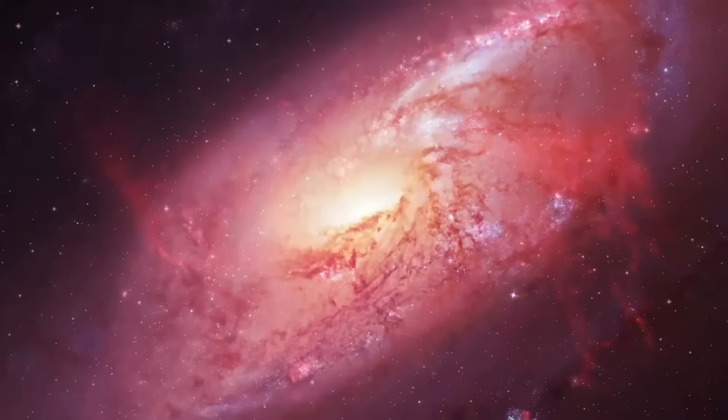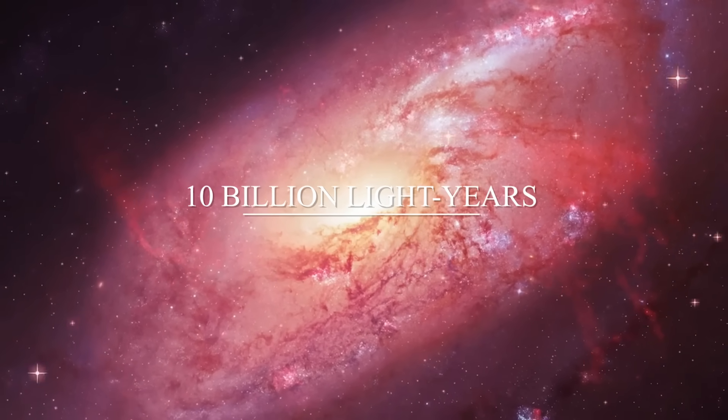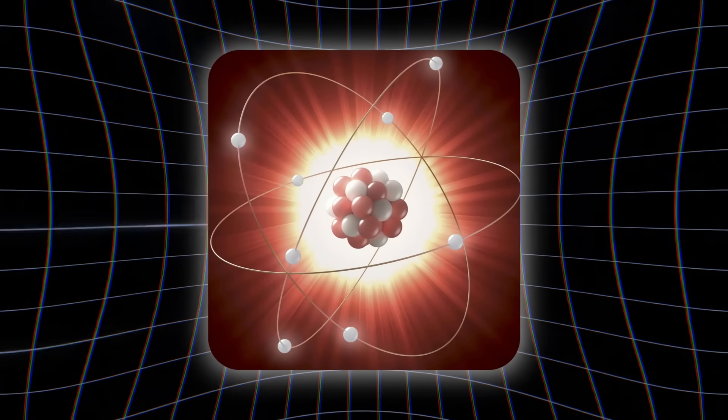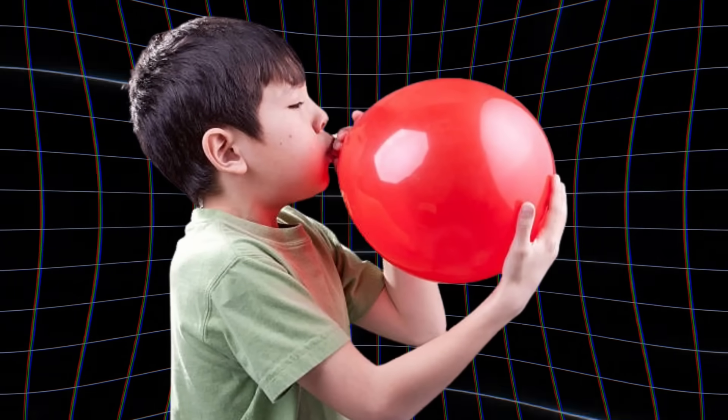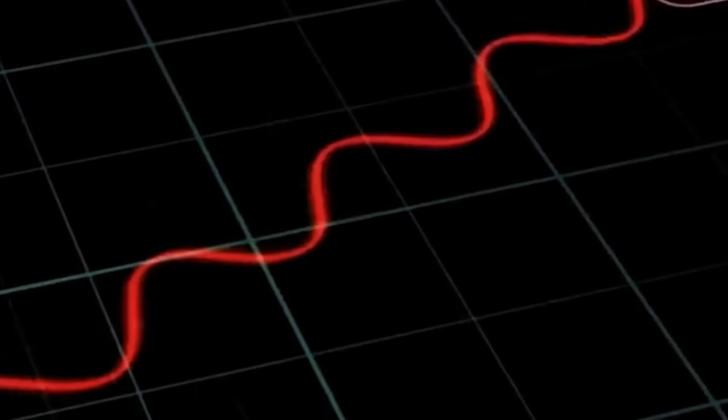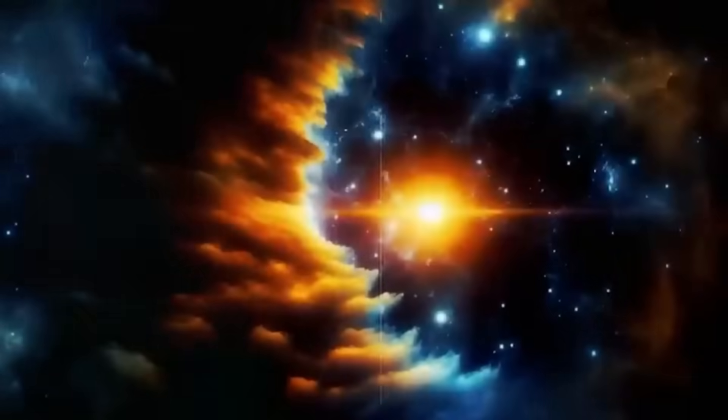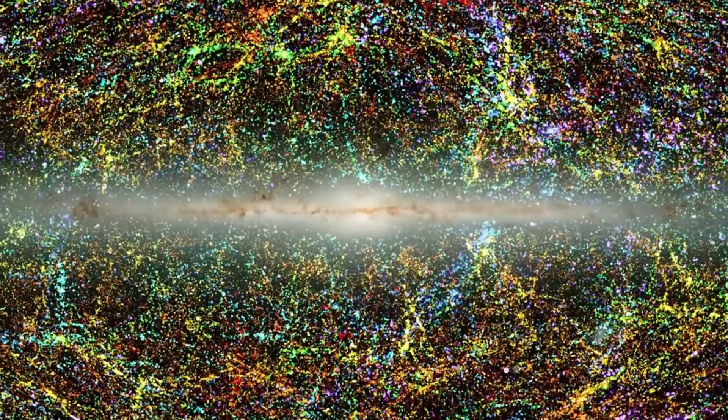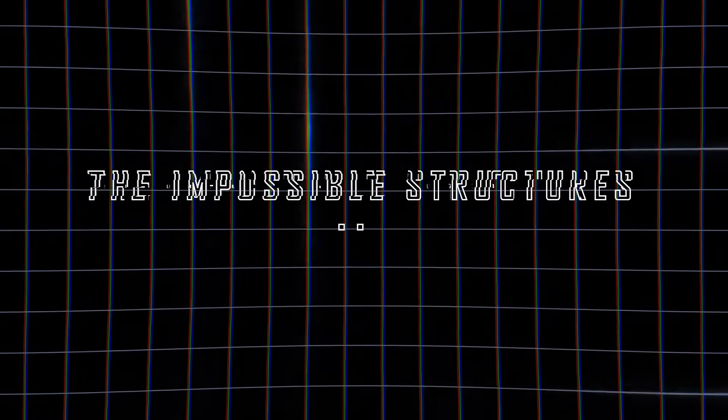The Hercules-Corona Borealis Great Wall, a structure spanning an estimated 10 billion light-years, challenges our understanding of how matter should be distributed. Imagine inflating a balloon, but one side stretches more than the other. That's what some scientists now believe may have happened during cosmic inflation. But if that were true, the implications for the shape of the universe are even bigger than you think.